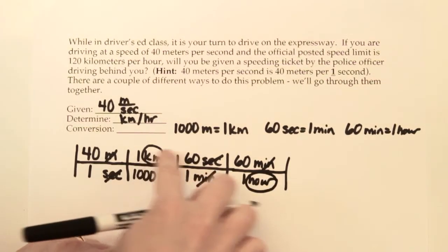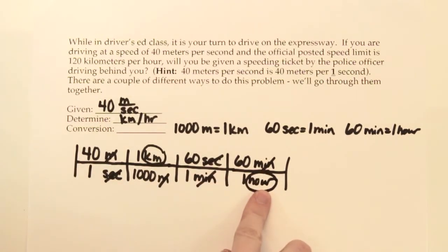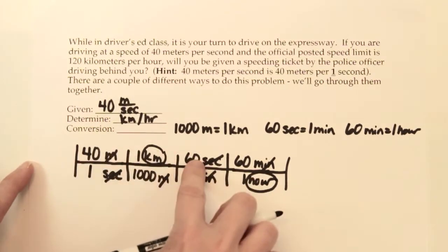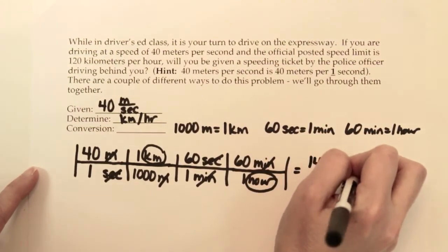Now we have kilometers over hours. That's the unit we want, so kilometers per hour. Now we just have to do a little bit of multiplying. 40 times 1 times 60 times 60 on the top is 144,000.